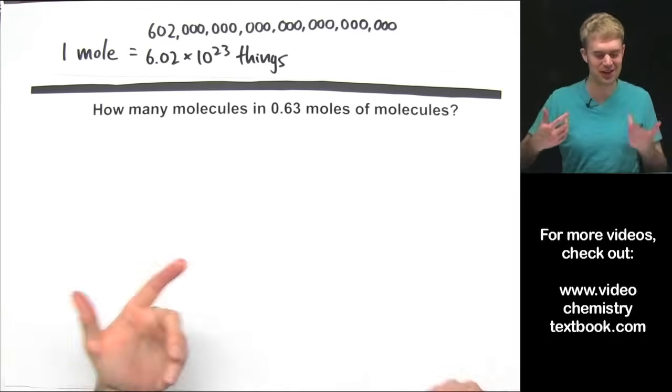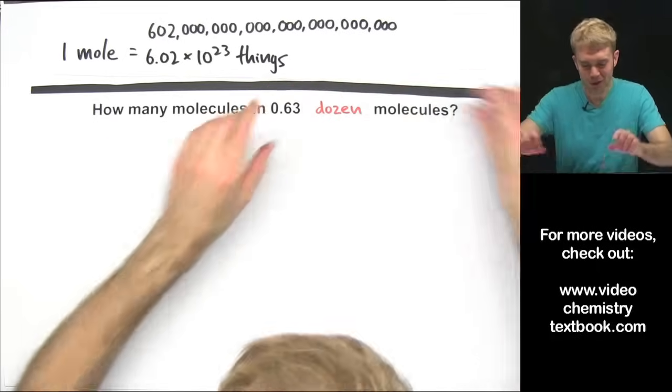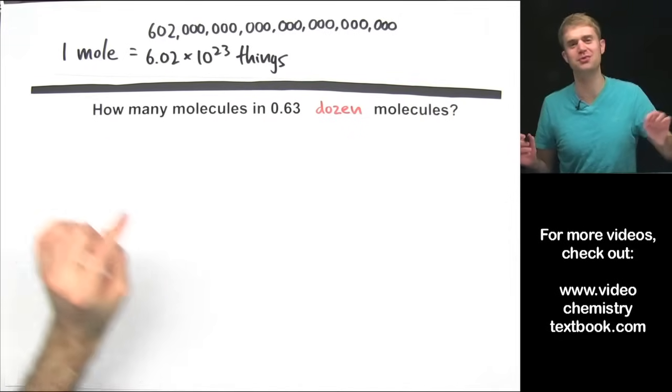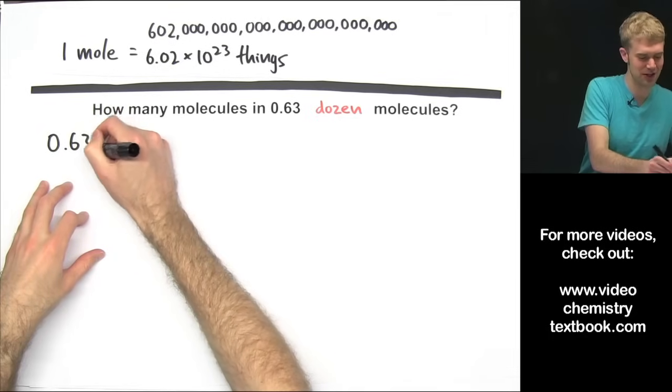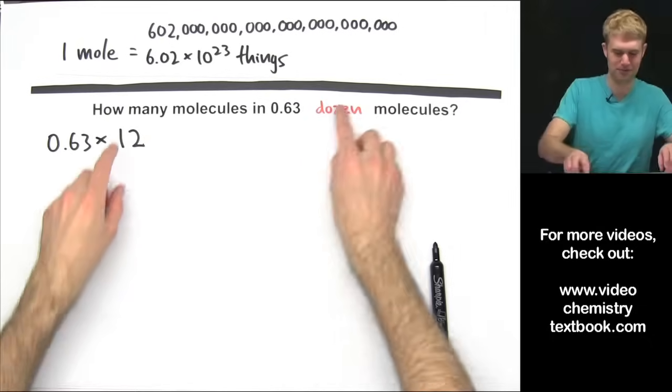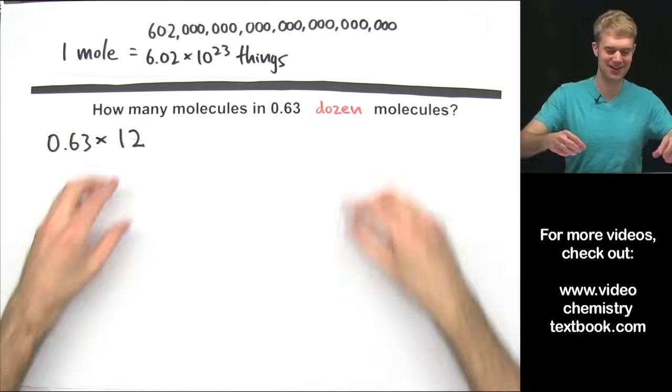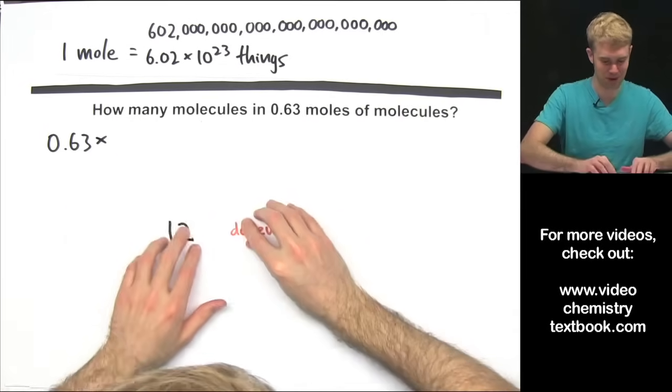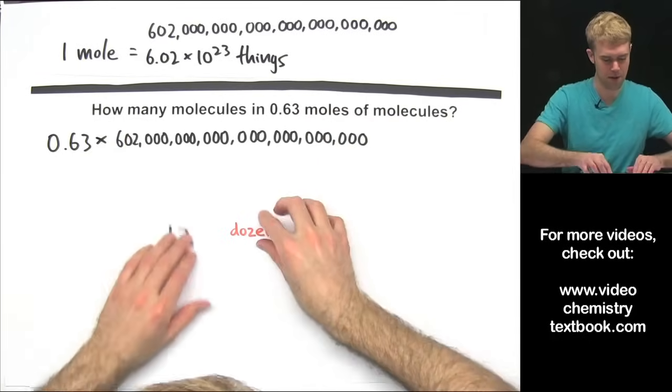So just to think through this as we did before, we're talking about 0.63 moles of molecules. What would we do if we had 0.63 dozen molecules? There are 12 things in a dozen so we do 0.63 times 12, the number of things in one dozen. That sort of makes intuitive sense. We're not talking about dozens here though, instead we're talking about moles. So we want to multiply this by the number of things that are in one mole.